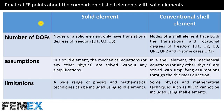Finally, I want to talk about practical FE points regarding the comparison of shell elements with solid elements. About the number of DOFs: nodes of a solid element only have translational degrees of freedom — U1, U2, and U3. But nodes of a shell element have both translational and rotational degrees of freedom — U1, U2, U3, UR1, UR2, and in some cases UR3.